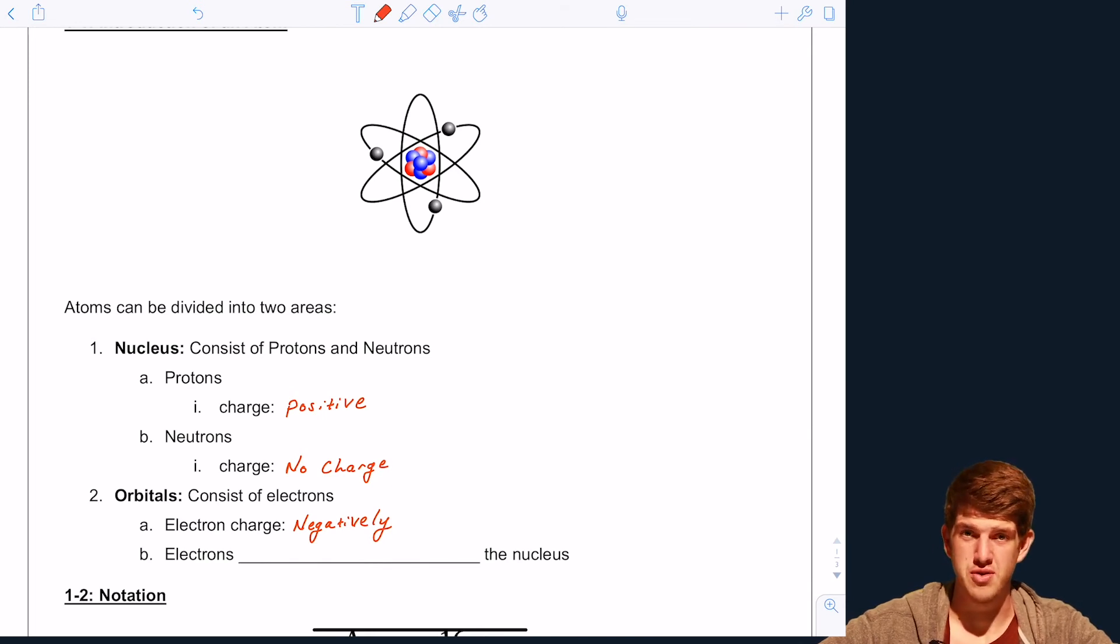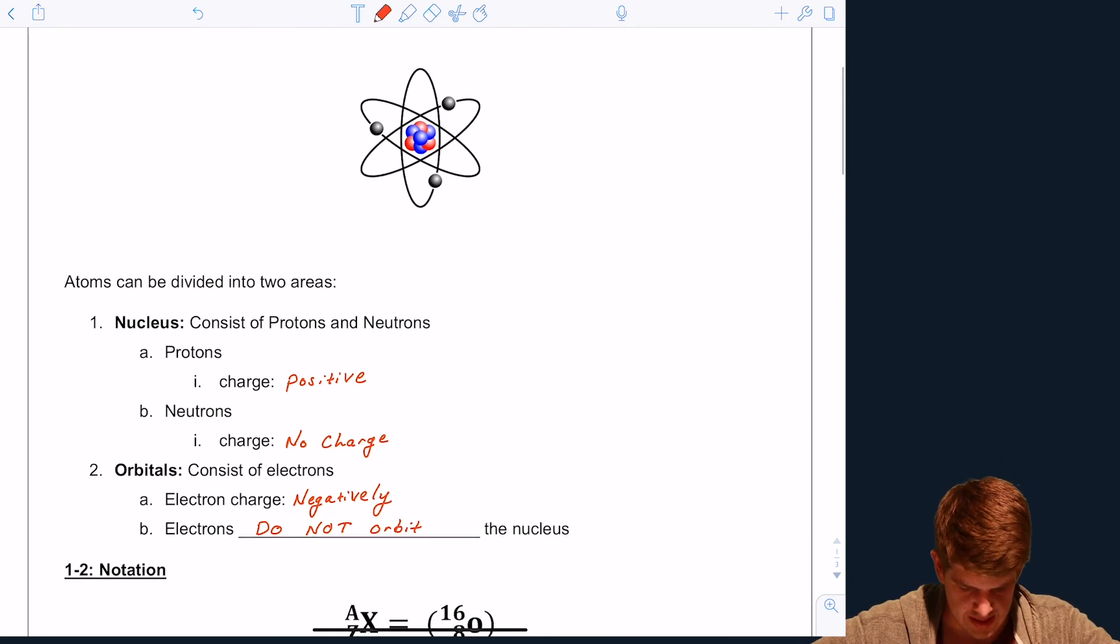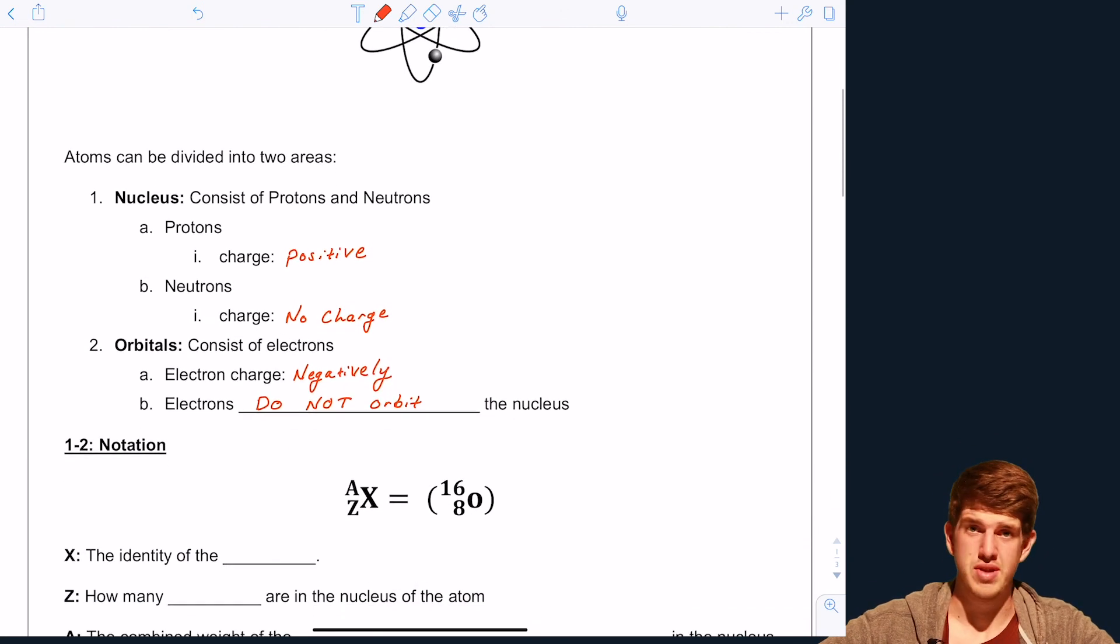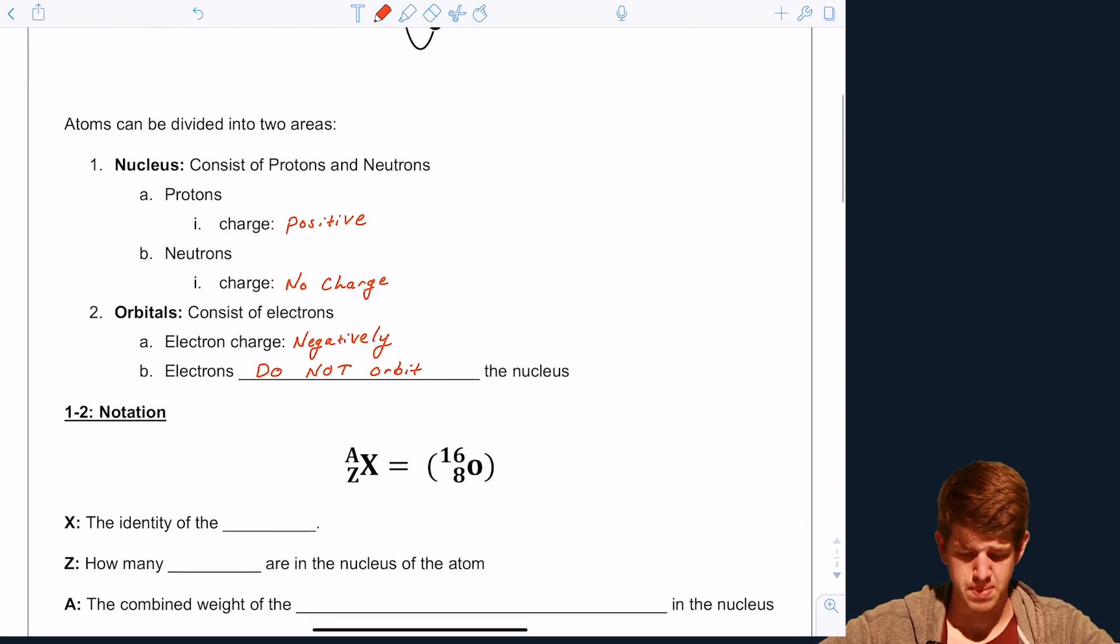And this is important because electrons do not orbit the nucleus. Very important, interesting topic, section two. So now that we've kind of been introduced to the atom and its different components.